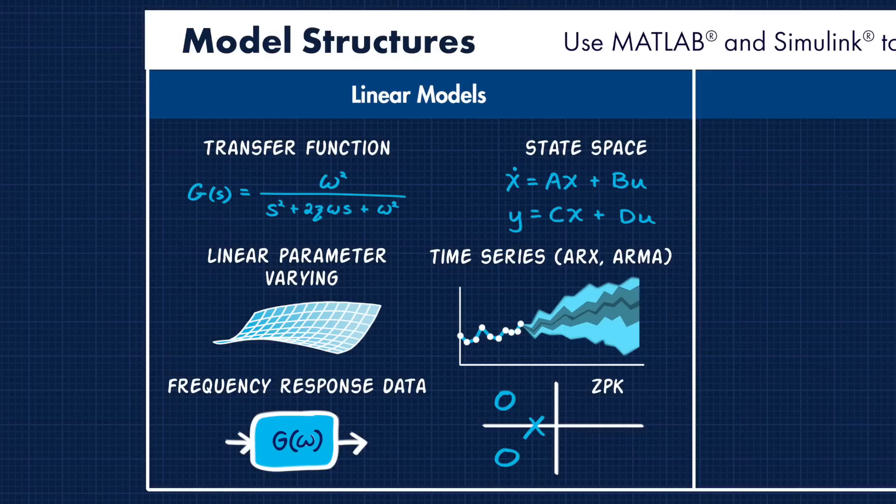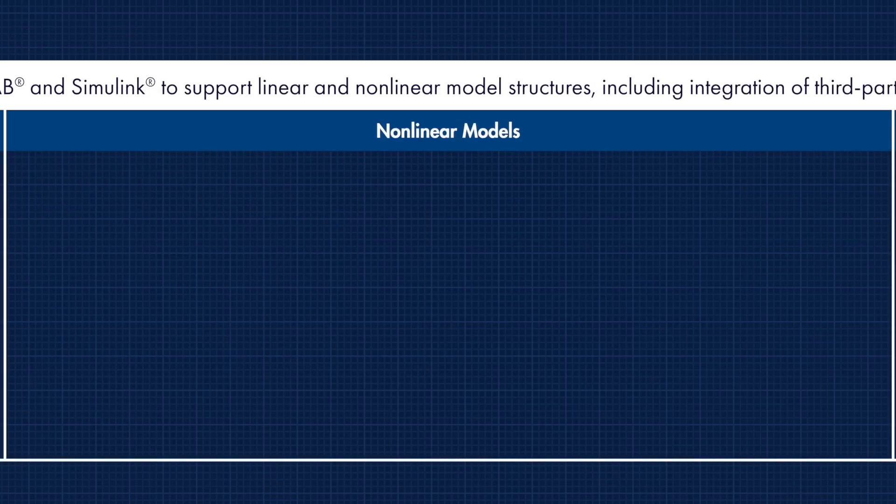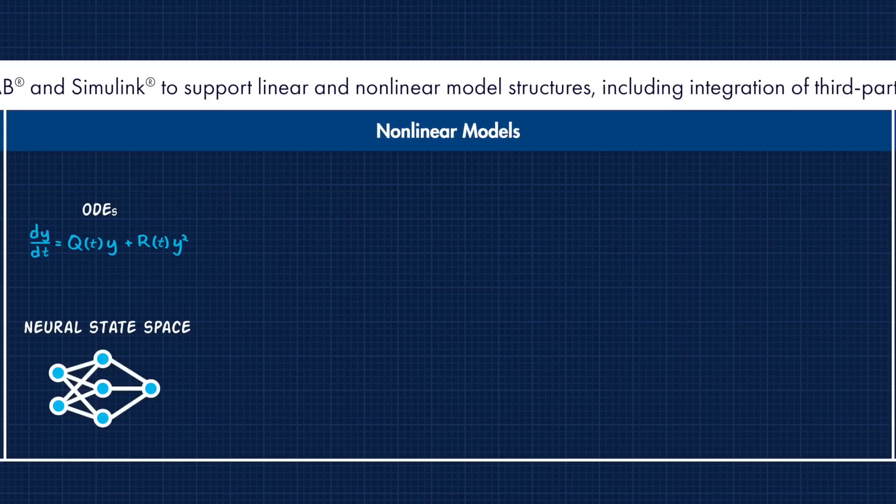For systems that are so nonlinear that a linear model doesn't suffice, you can move up to a nonlinear model structure. These are structures like ordinary differential equations, where you can capture the nonlinearities with an interpretable mathematical equation. Or you can use a deep neural network to represent the state space equations. These are the state equations, where x dot is some function of state x and input u, and the output equations, where the output y is a function of x and u.